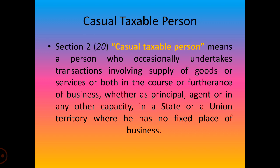The casual taxable person can claim input tax credit of all the inward supplies for making outward supplies. In summary, a casual taxable person is someone who occasionally undertakes a transaction involving supply of goods or services or both in the course or furtherance of business, whether as a principal or an agent, but has no fixed place of business in the state or union territory where he undertakes that transaction.